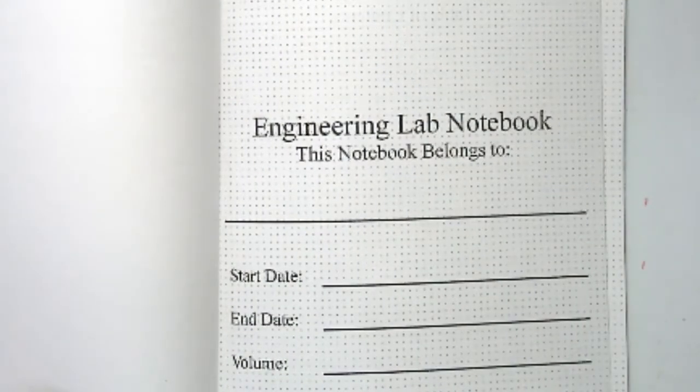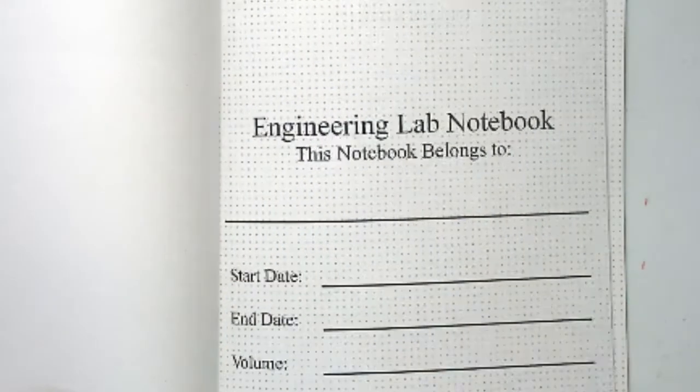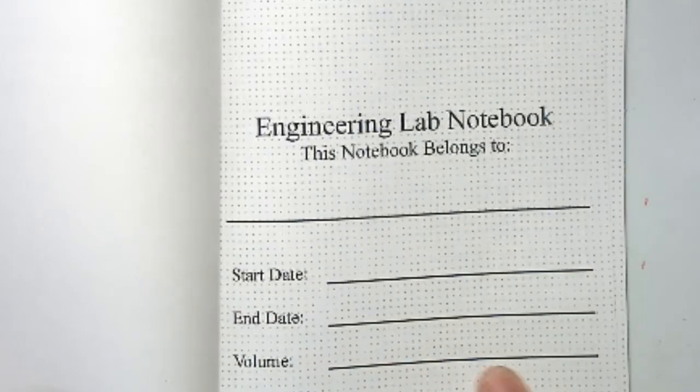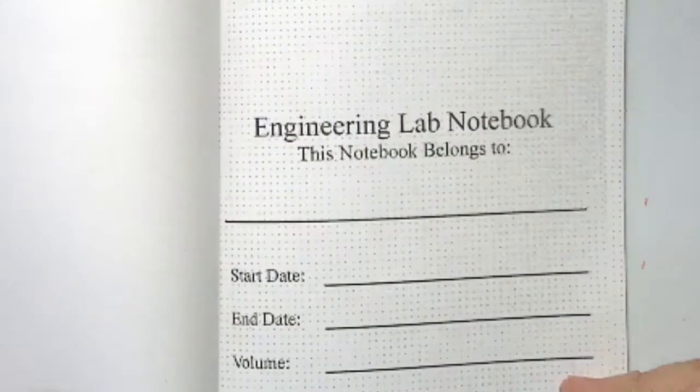It has a start and end date. When you keep a notebook, you want to keep track of when you started it and when you end it. And then if this is the first notebook, the second notebook, maybe this notebook is for a specific project, you would write that project name here.